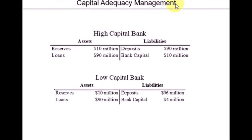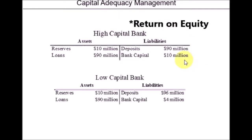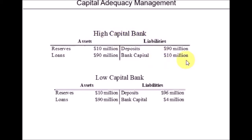The fourth component of bank management principles is managing the amount of capital. Banks don't want too little capital because capital protects against bankruptcy, and there are regulatory minimum capital requirements. Let's look at two banks: one with high capital of 10 million out of 100 million total assets (10%), and another with only 4 million in capital (4%) but the same 100 million in total assets.